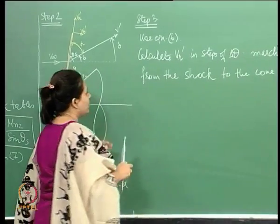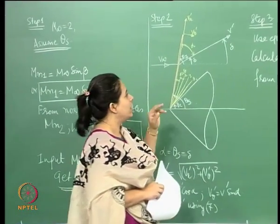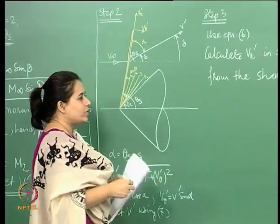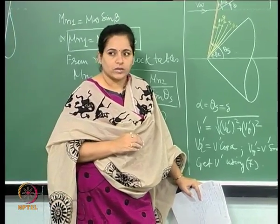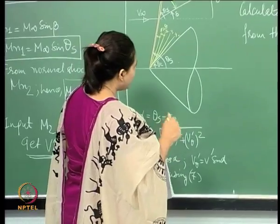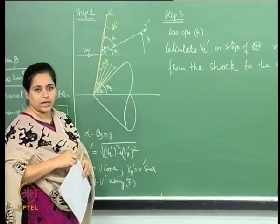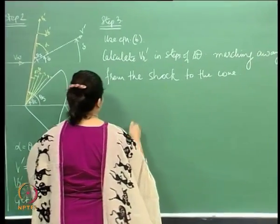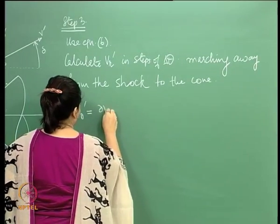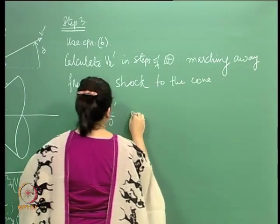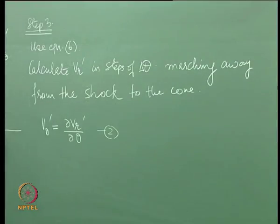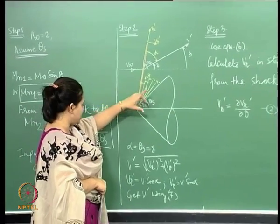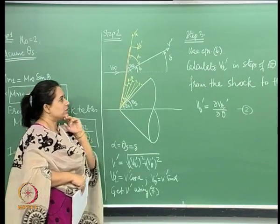We will use a fourth-order Runge-Kutta method to solve the Taylor-Maccoll equation. Having done that, once we find V_r_dash, we calculate V_theta_dash using the relationship. At each radial line, when we get a V_r_dash, we will also get a corresponding V_theta_dash.